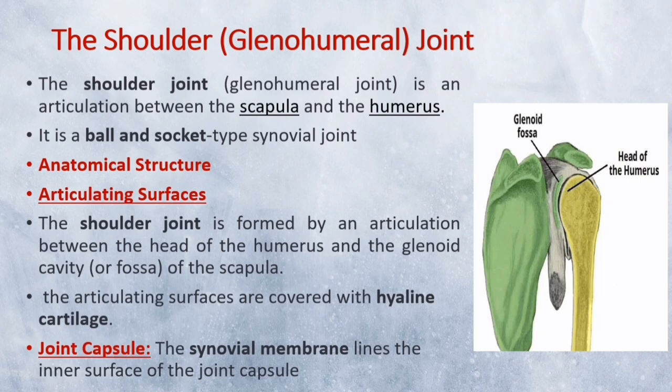The shoulder joint, or glenohumeral joint, is an articulation between the scapula and the humerus. It is a ball-and-socket type synovial joint, and one of the most mobile joints in the human body. The shoulder joint is formed by an articulation between the head of the humerus and the glenoid cavity of the scapula. The articulating surfaces are covered with hyaline cartilage. The head of the humerus is much larger than the glenoid fossa, giving a wide range of movement at the cost of instability. The glenoid fossa is deepened by a fibrocartilage rim called the glenoid labrum.